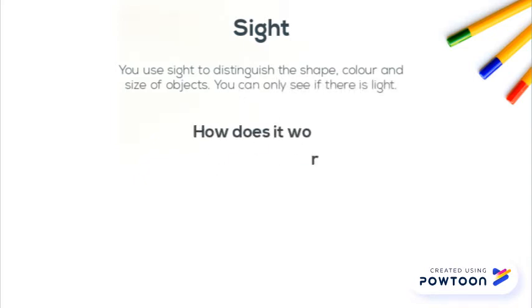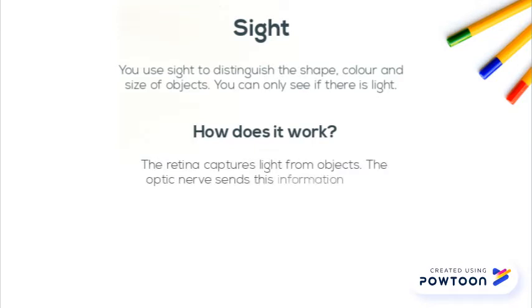How does it work? The retina captures light from objects. The optic nerve sends this information to the brain.